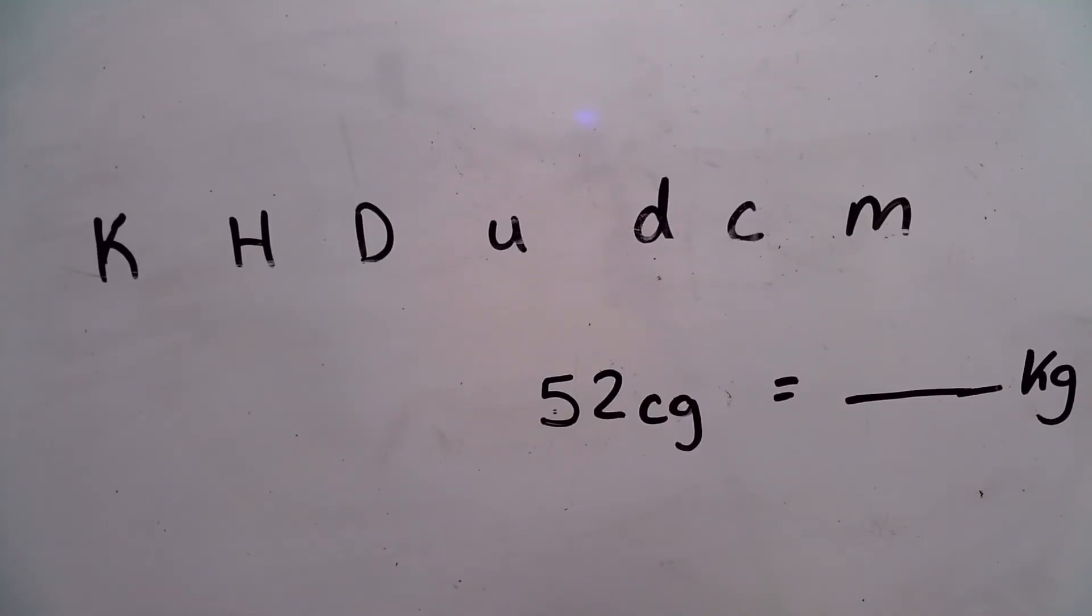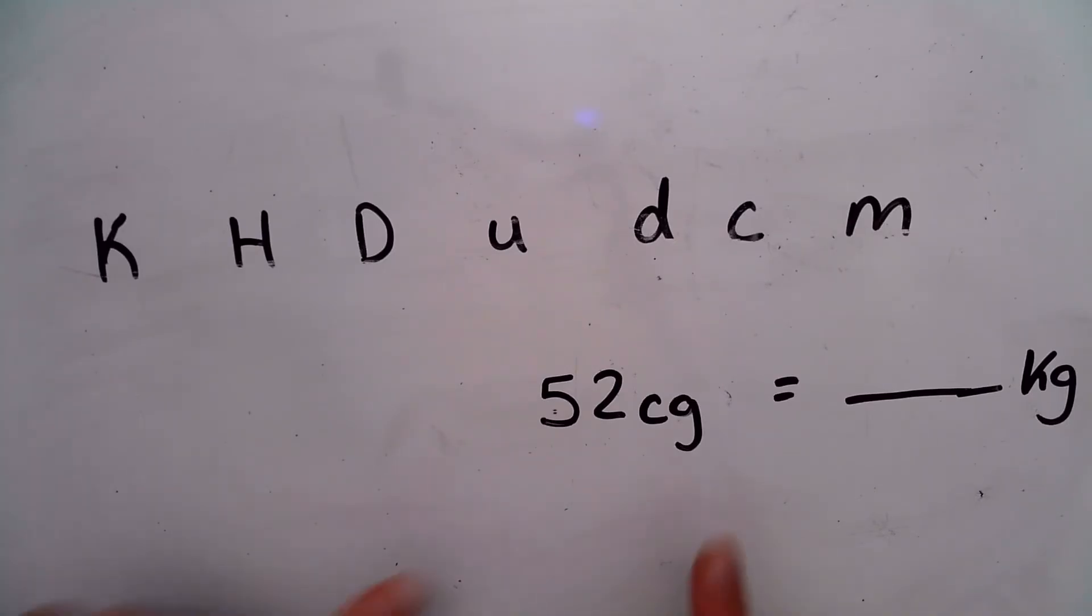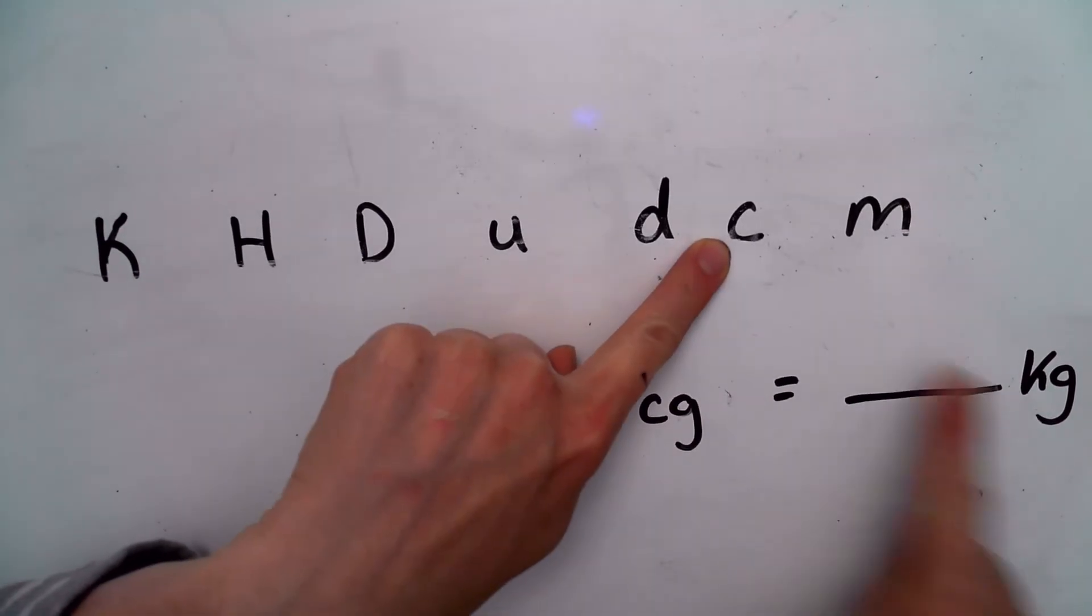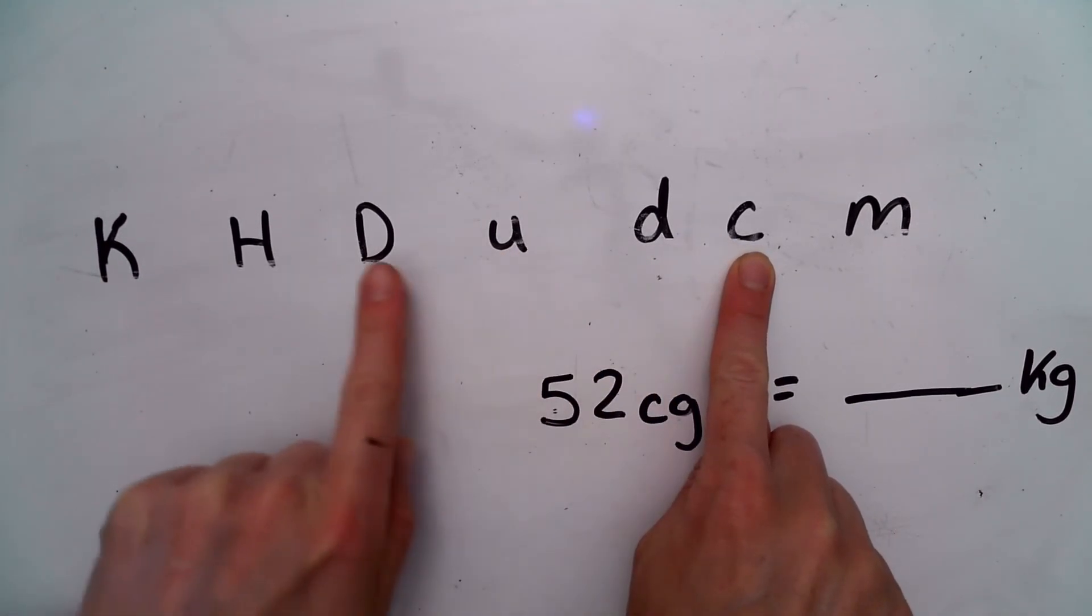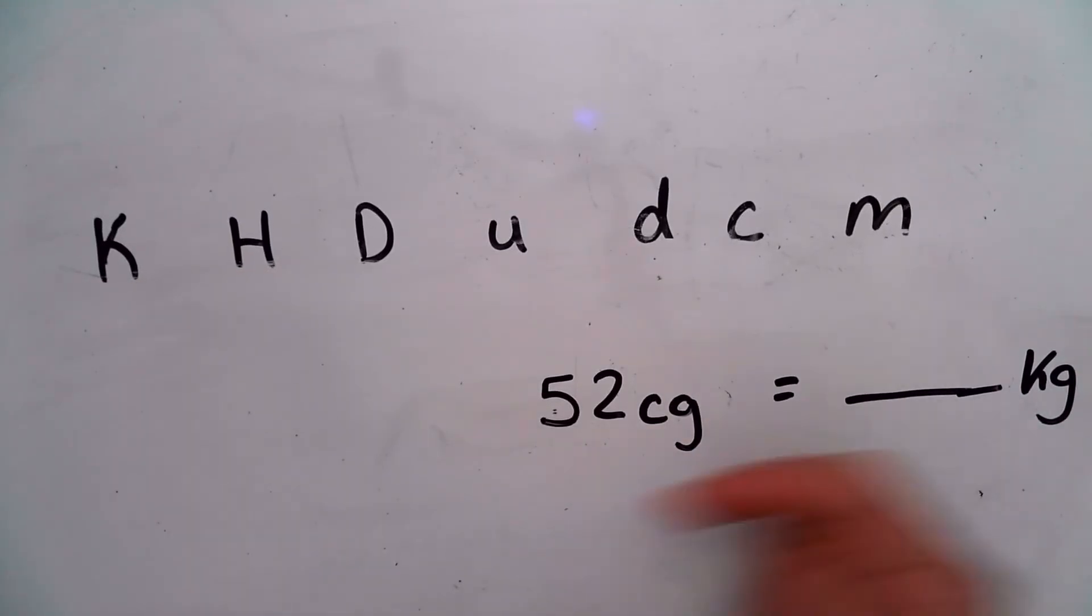So in my years of teaching, I've seen a variety of common mistakes. The first one is being sloppy. So for example, in this case, we're starting at centi and we want to convert to kilo. So we want our fingers to move one, two, three, four, five times to the left.